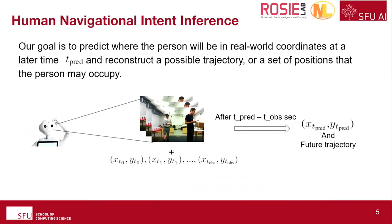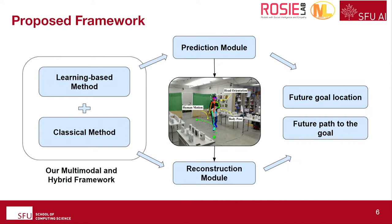The dataset is publicly available and we have over 30 hours of video data right now, with more to come. Our goal is to predict where a person will be in real-world coordinates in the near future, and also to reconstruct possible future trajectories and the positions they might occupy to benefit robot navigation algorithms.